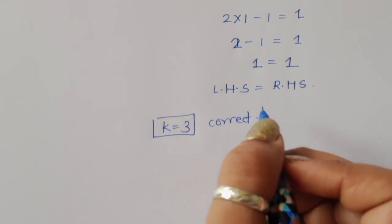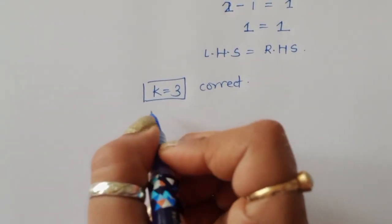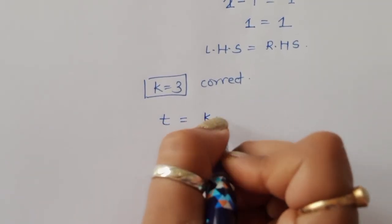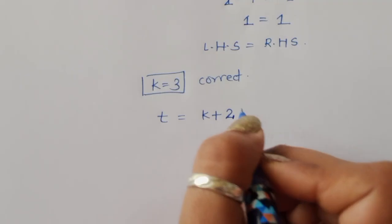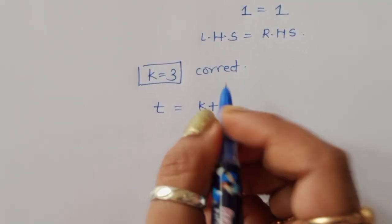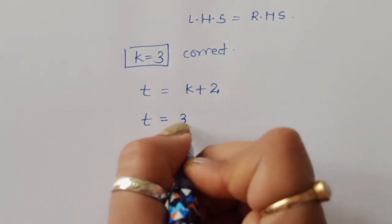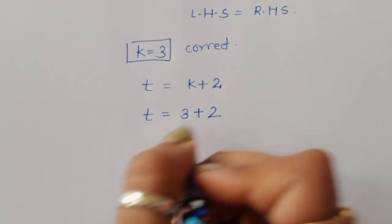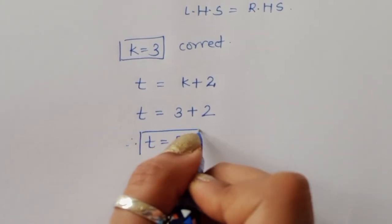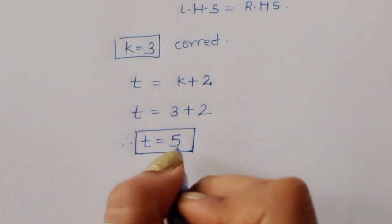We already established that t equals k plus 2. Substituting k equals 3, we get t equals 3 plus 2, therefore the value of t is equal to 5.